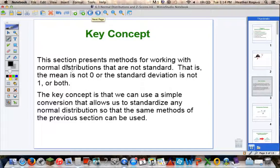The key concept is this section presents methods for working with normal distributions that are not standard. That is, their mean is not 0 and the standard deviation is not 1. The key concept is that we can use a simple conversion that allows us to standardize any normal distribution so that the same methods from section 6-2 can be used here.